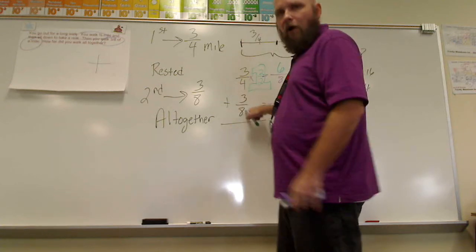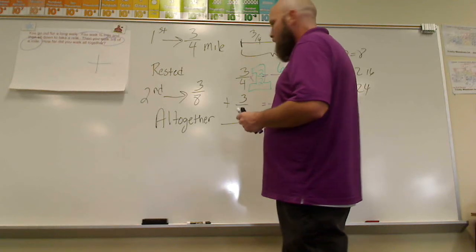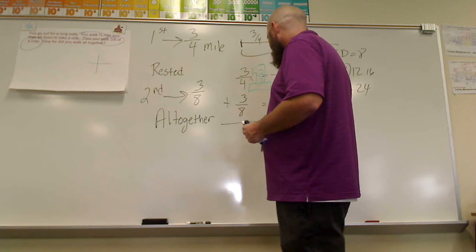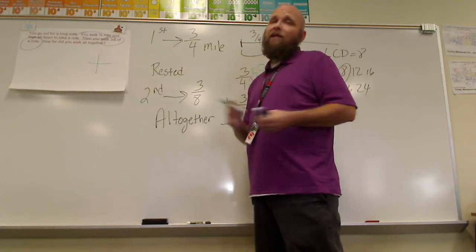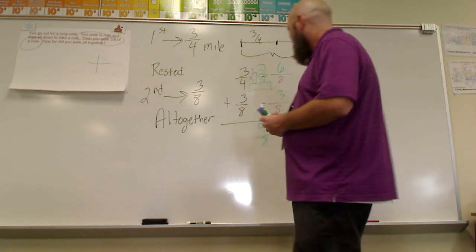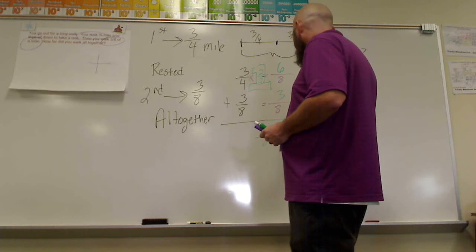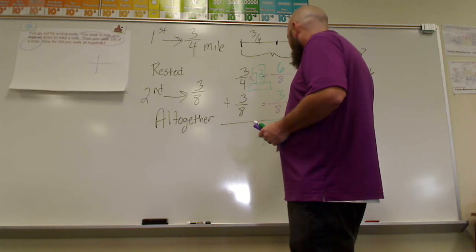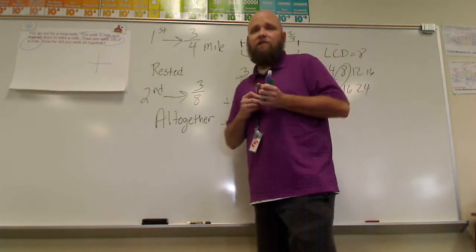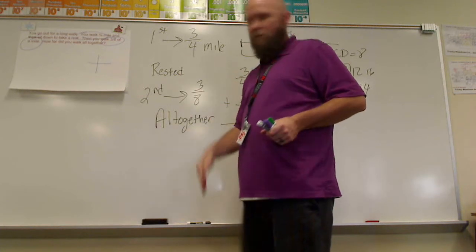Three-eighths already has a denominator of eight, so we bring it over. We get a total of nine-eighths. But we can't leave it at nine-eighths, because that's an improper fraction, and we don't leave improper fractions as answers — we have to convert it to a mixed number.